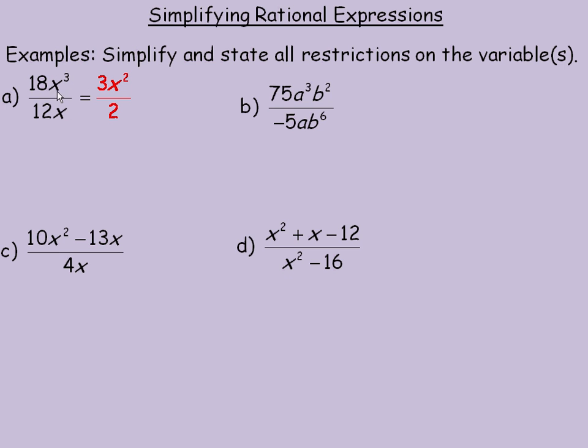So 3 minus 1 is 2. The larger power of x was in the numerator, so it's still in the numerator. So the simplest form of 18x cubed over 12x is 3x squared over 2.